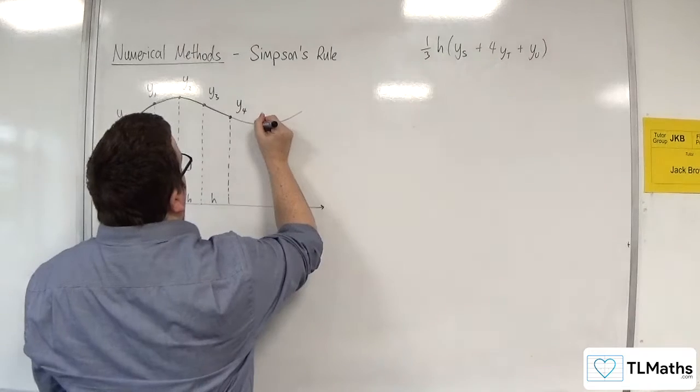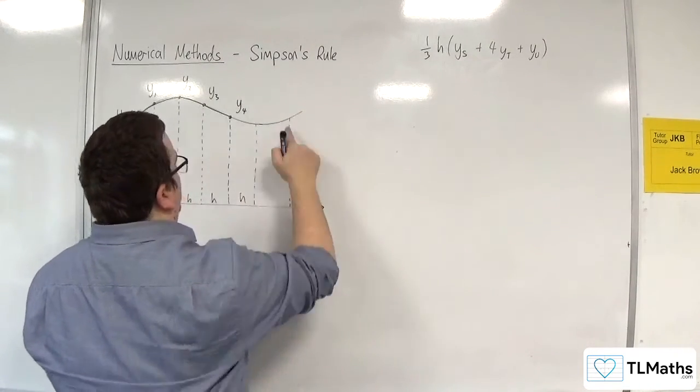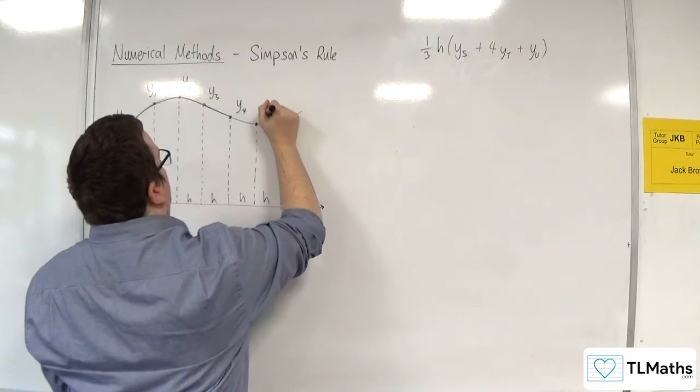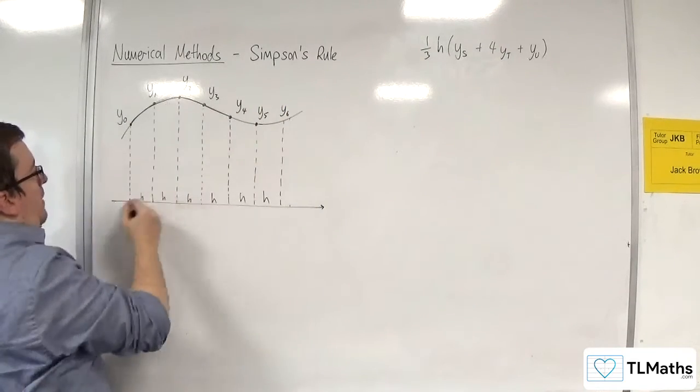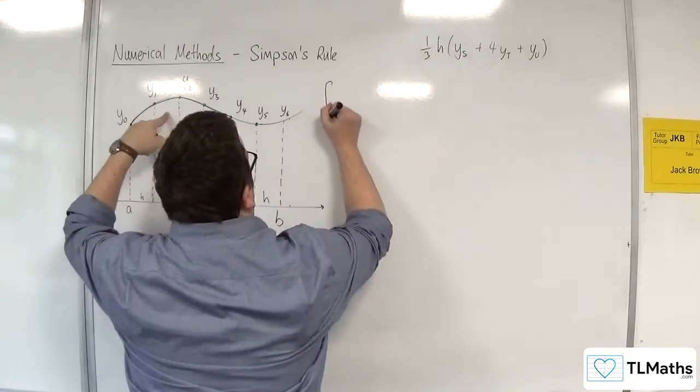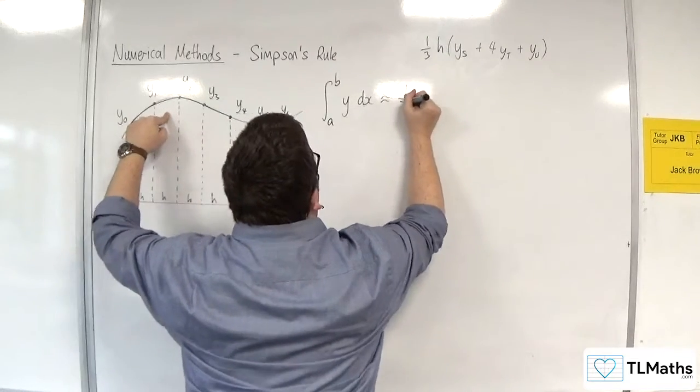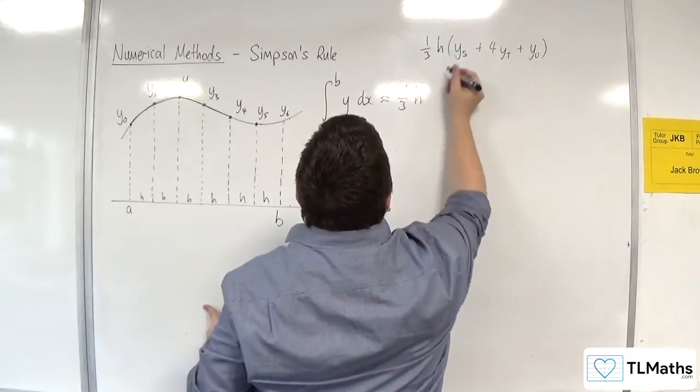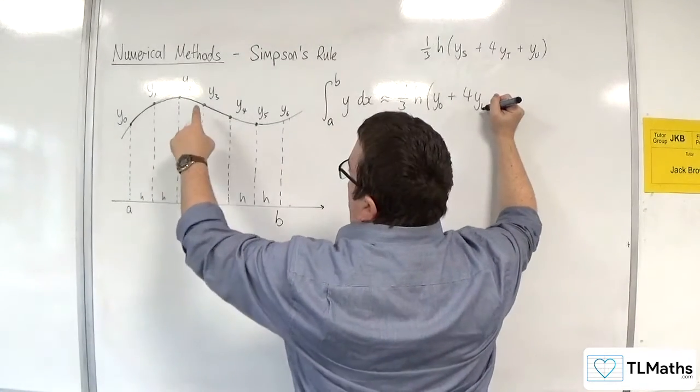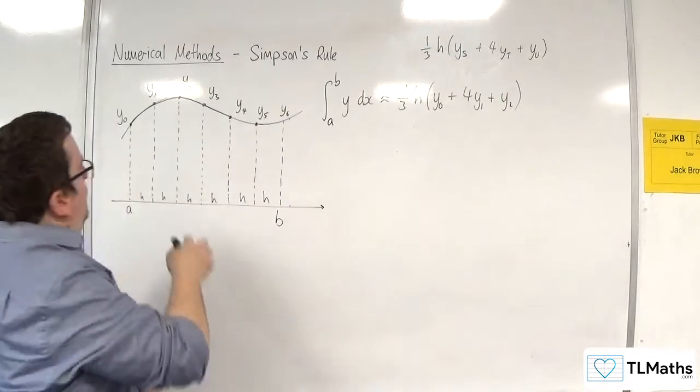So, let's go with two more strips. There's y5 and y6. So I've got this first one, and that's going to be point B. I've got this first one here, so that my integral between A and B of ydx will be approximately equal to one third times h times the first one, y0, four lots of the y1, and then one lot of the y2. That's my first bit.